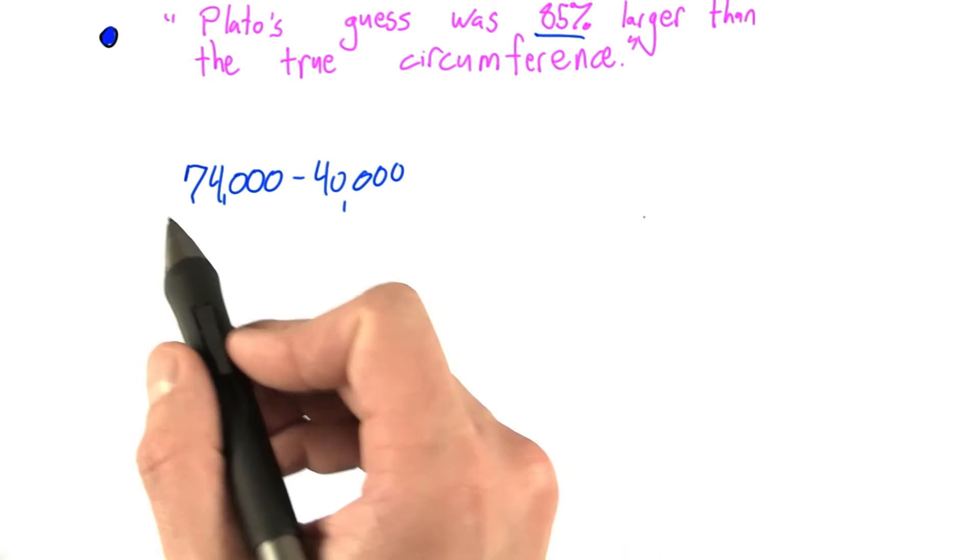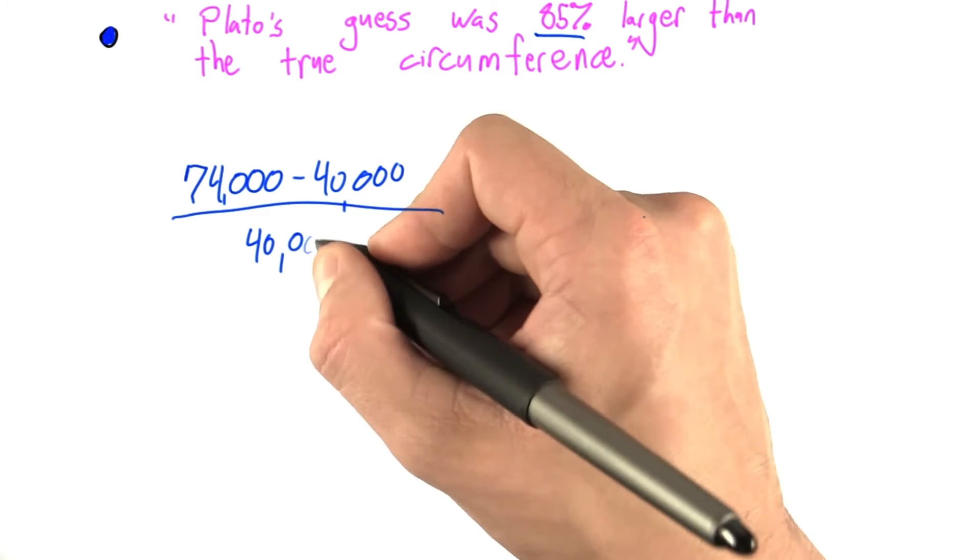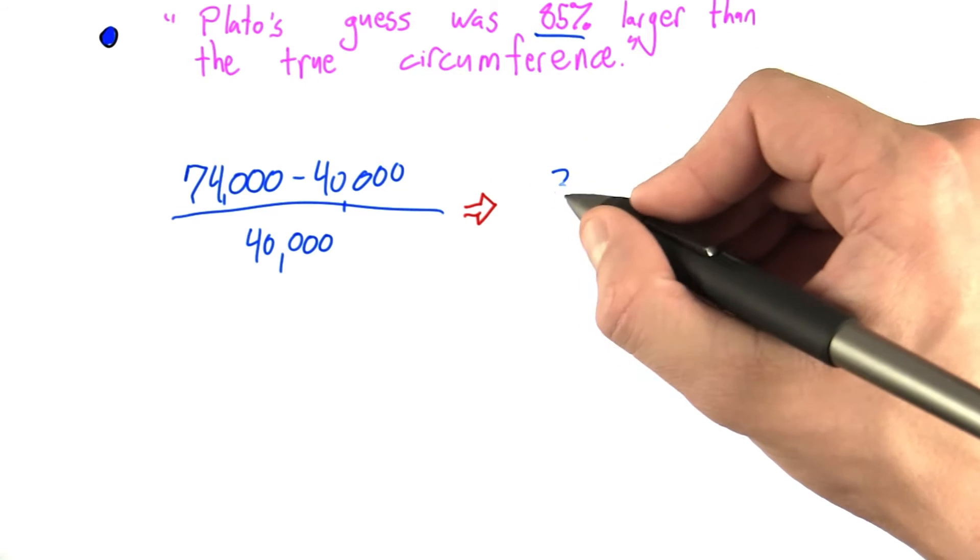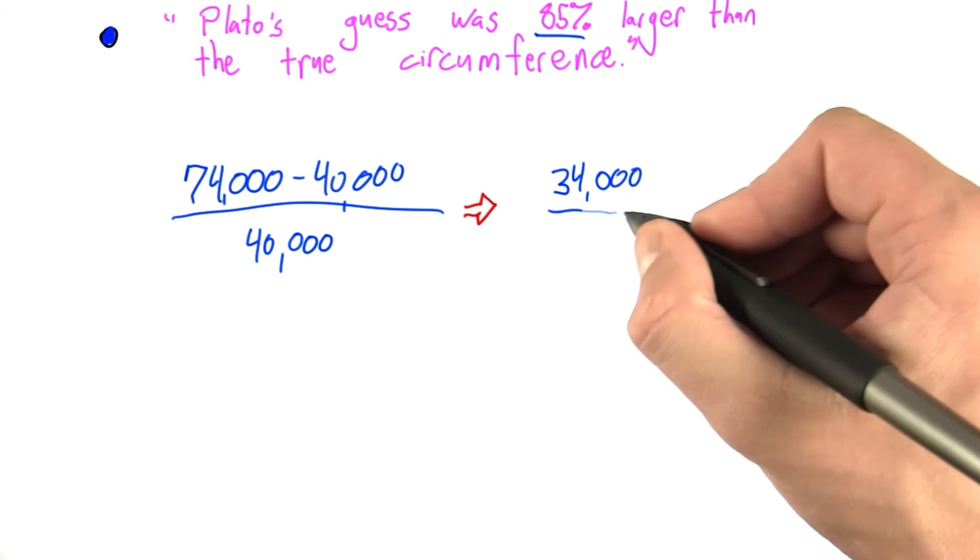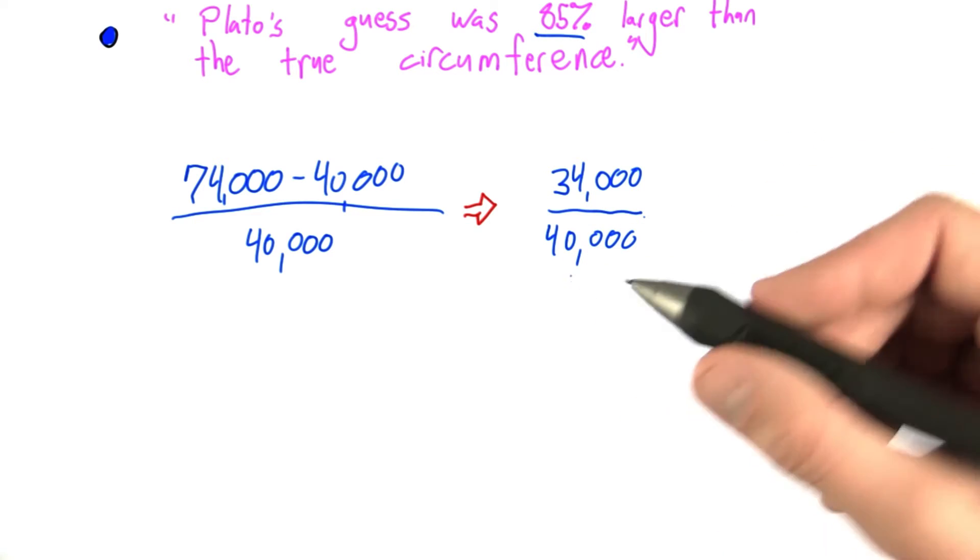So we look at this absolute error, and we divide by the true circumference. So in this case, 40,000 kilometers. When I do this, I get 74 minus 40, so 34,000, over 40,000. The absolute error over the known circumference.